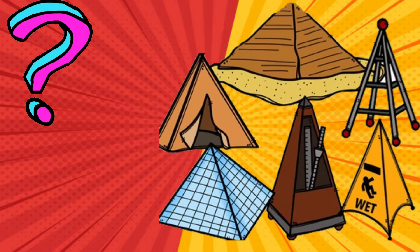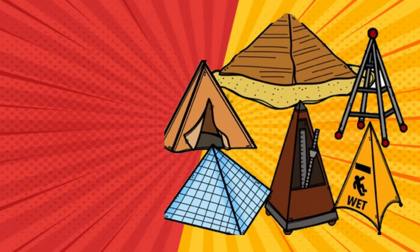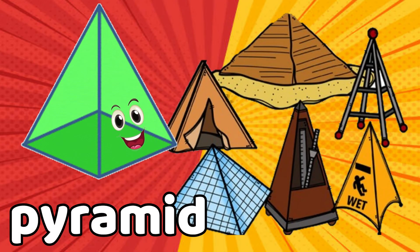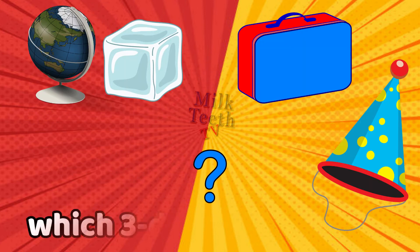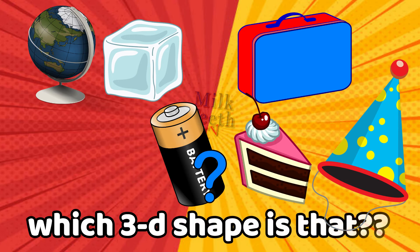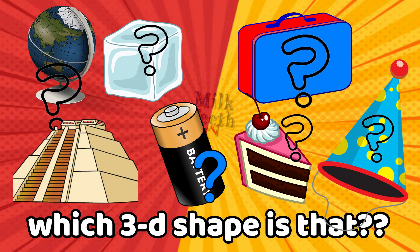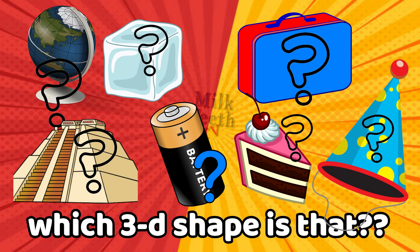That's a pyramid! So did you learn, kids? All the things around us — even our planet Earth — have different three-dimensional shapes. A globe is a sphere, an ice cube is a cube, a suitcase is a cuboid, a battery is a cylinder, and a slice of cake is a prism.